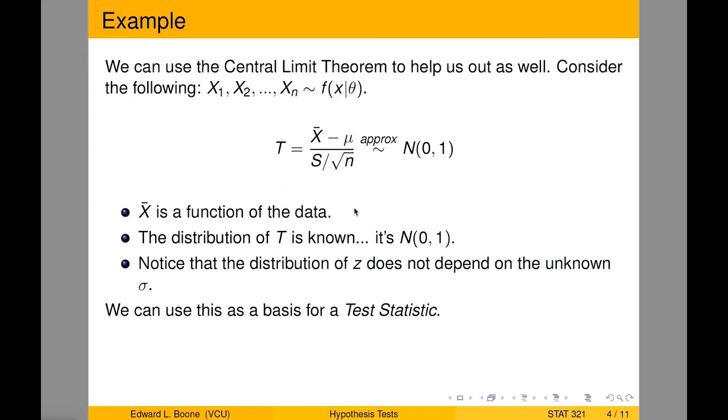Another example that you might see as well is if you use the central limit theorem. It doesn't matter what the distribution is provided it has a mean and a variance. Then this pivotal quantity t, which will ultimately be a test statistic, is approximately normal zero, one. It doesn't mean it's exactly, but it's approximately, and it's pretty close, so it allows us to be used.